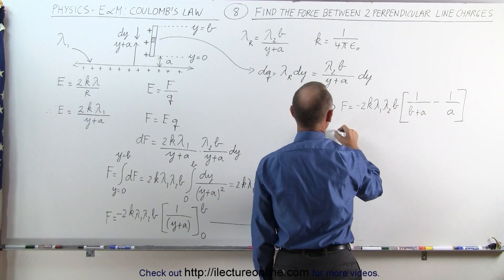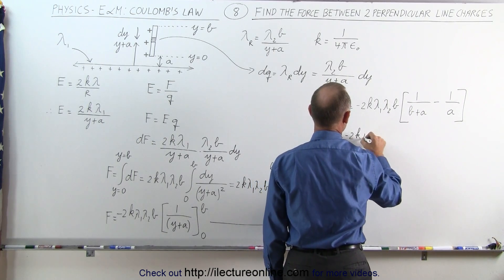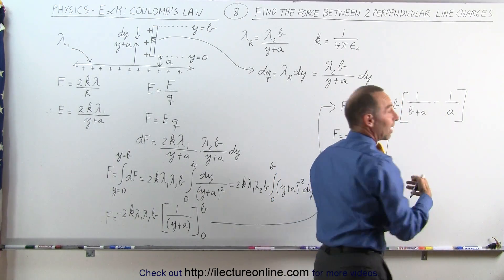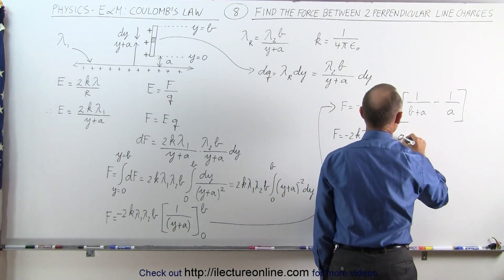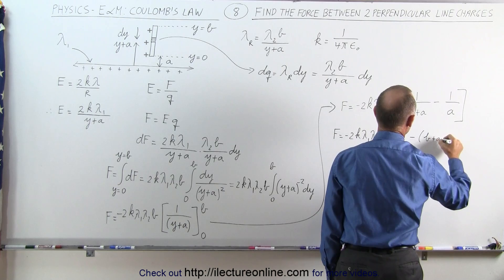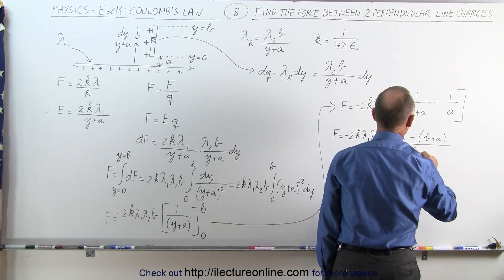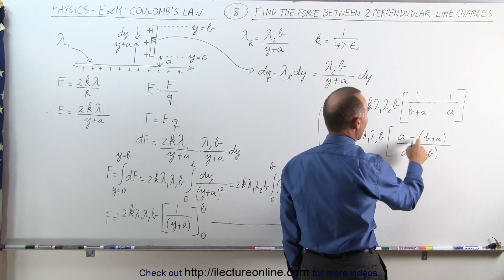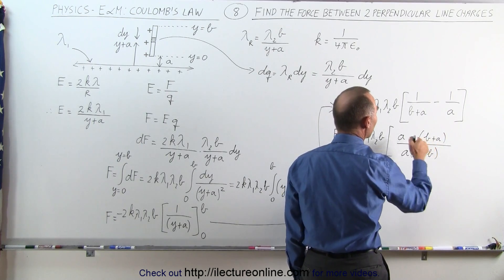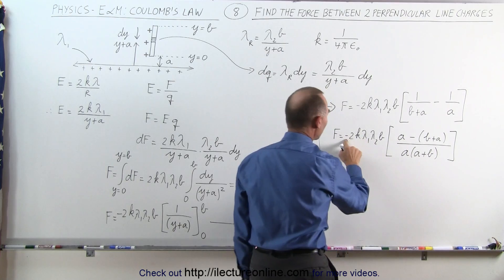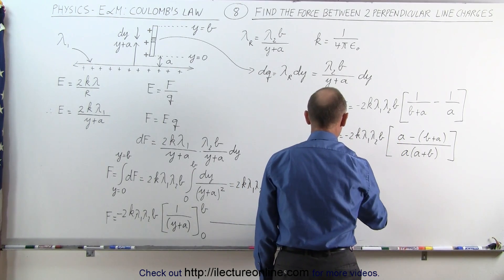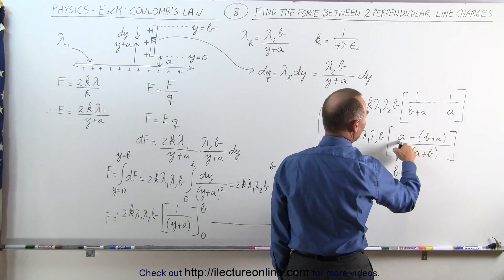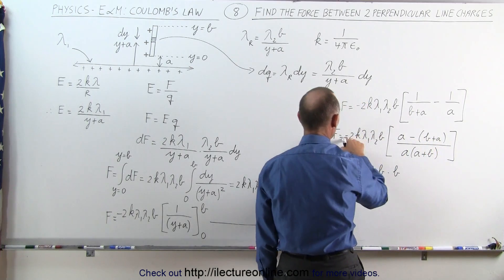Simplifying, F equals minus 2k·λ₁·λ₂·b times the quantity [a minus (b + a)] all divided by a·(a + b). Expanding the numerator, a minus a cancels out, leaving minus b. The minus b combined with the leading minus sign becomes positive b, so F equals 2k·λ₁·λ₂·b times b in the numerator divided by a·(a + b).